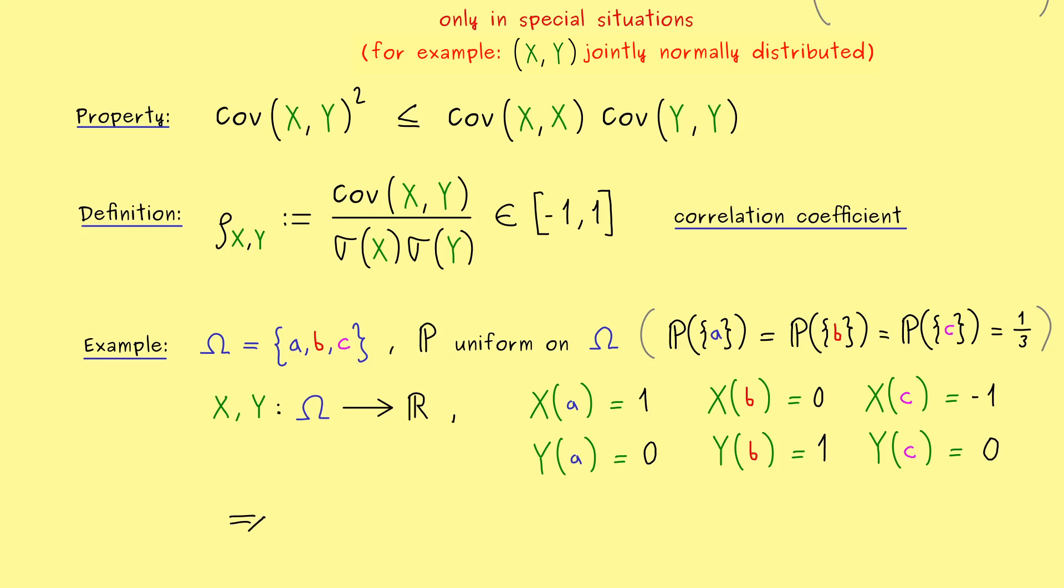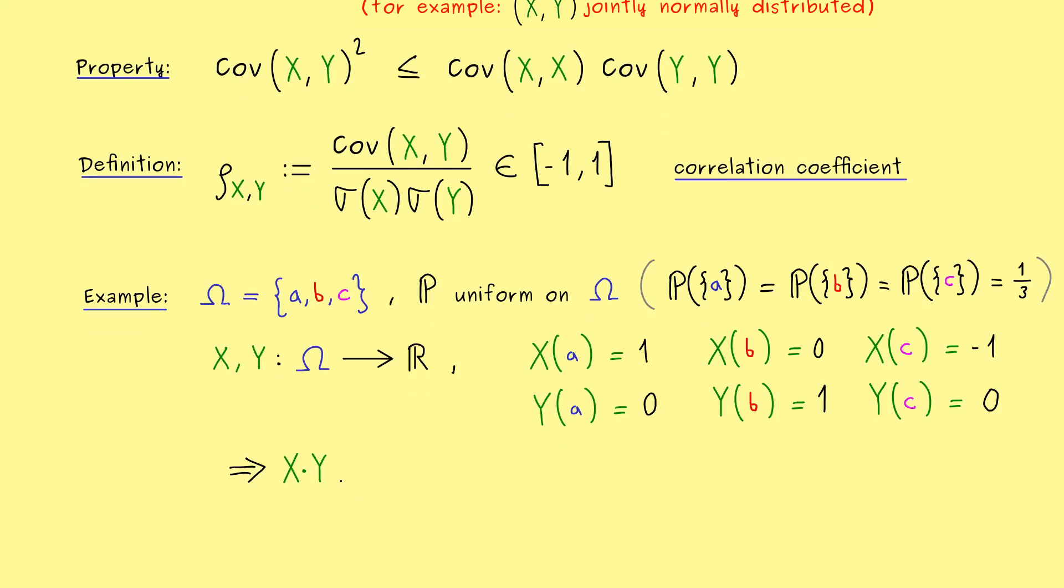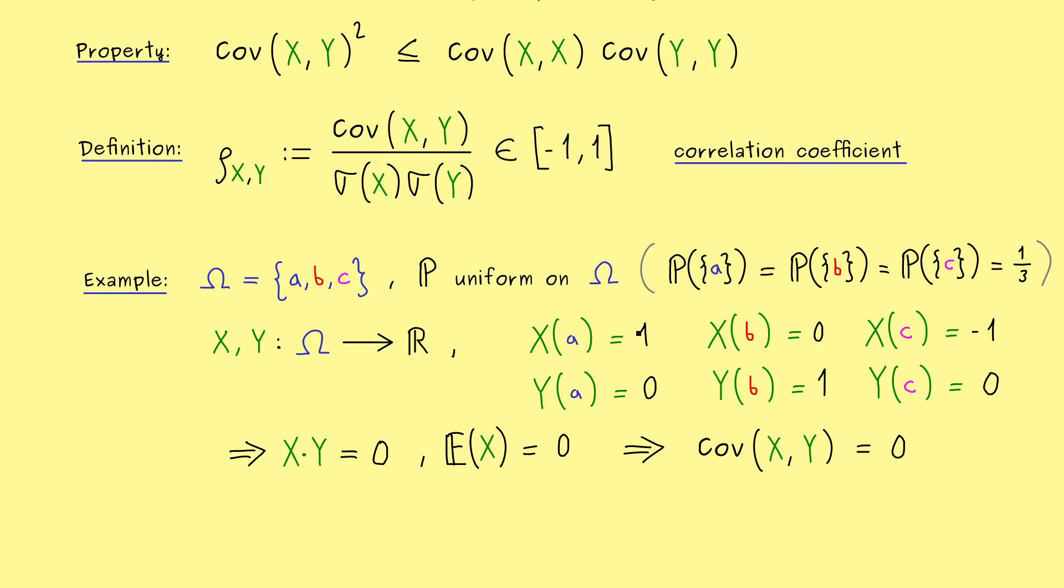Therefore, also the expectation of this random variable will be equal to 0. However, also by construction, the expectation of X is equal to 0. So by using the formula above, we conclude that the covariance between X and Y is equal to 0. So indeed, they are uncorrelated, simply because how they act on each element.